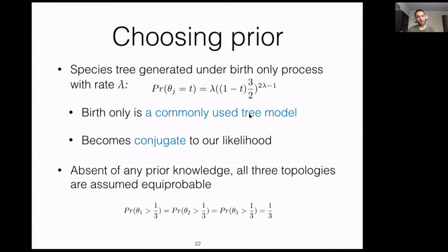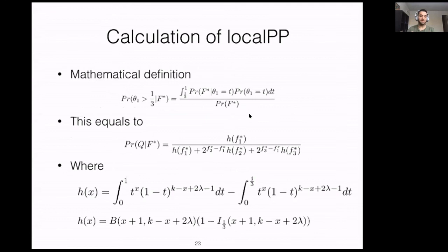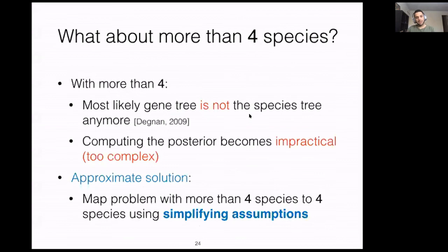Everything I talked about so far is only for four species. With more than four species, the most likely gene tree is not the same as the species tree, and computing the posterior becomes too complex to analytically compute.